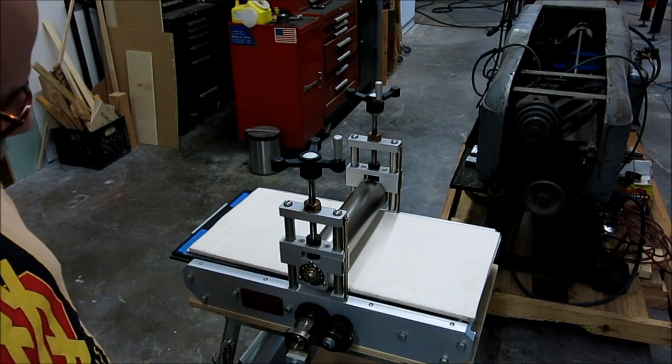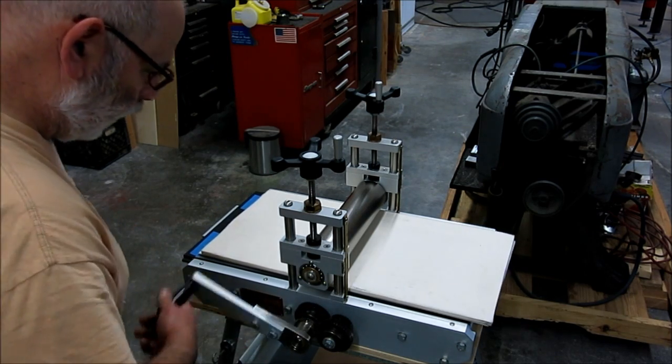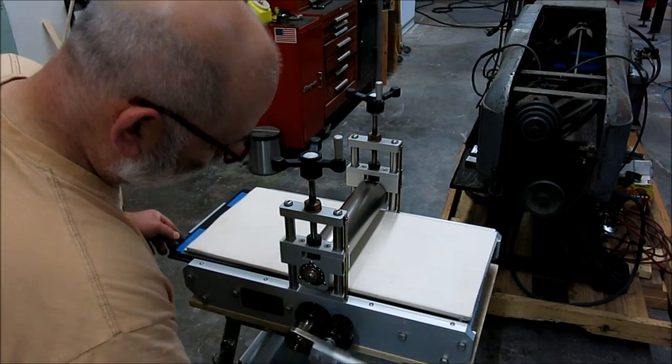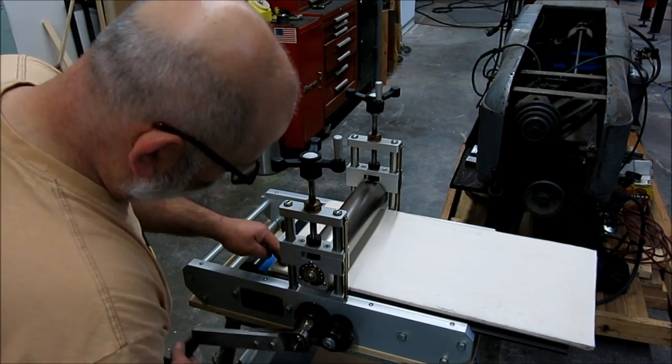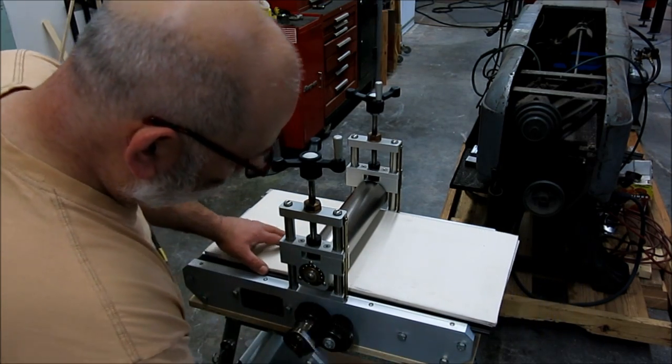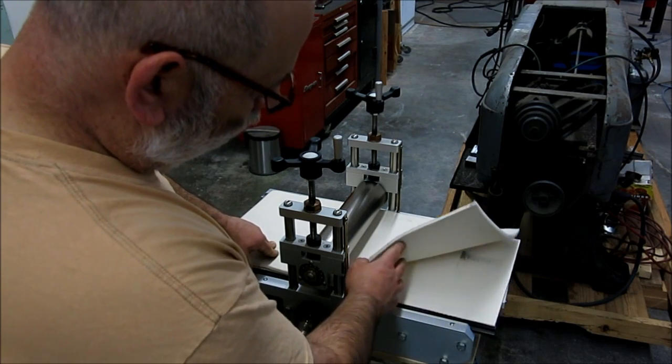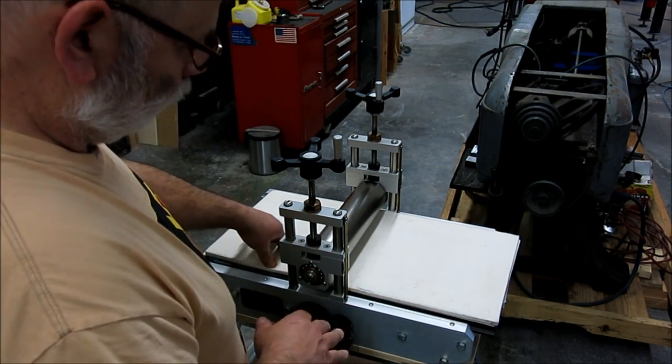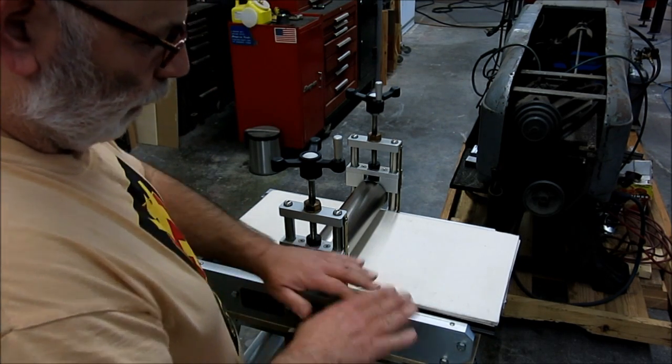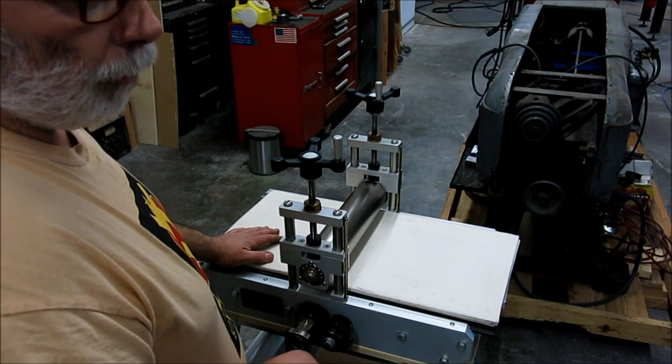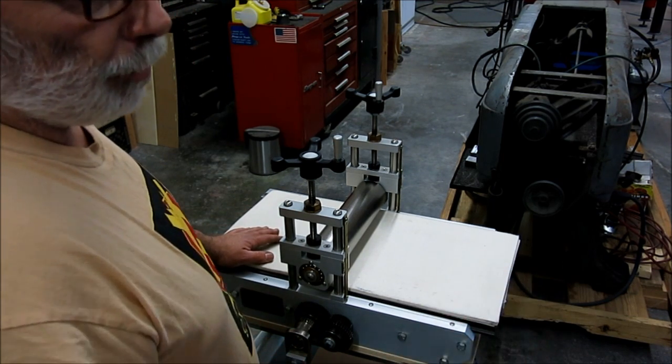Then there's a little gear reduction so that you can run the stuff through under pressure. And these felt blankets act like they spread the pressure out over the plate. And I have a plate I'll show you too.